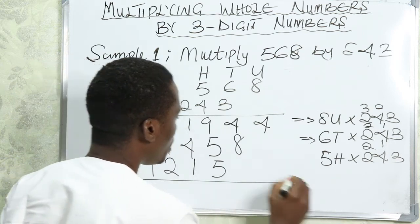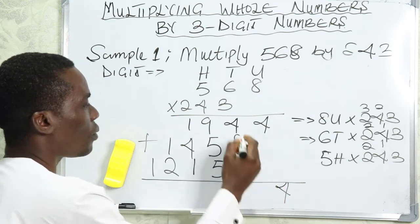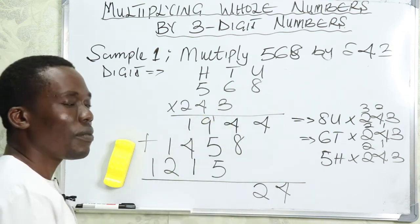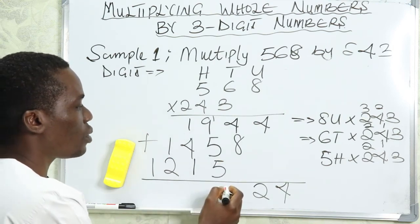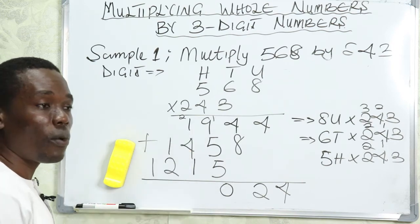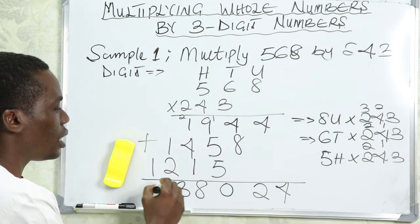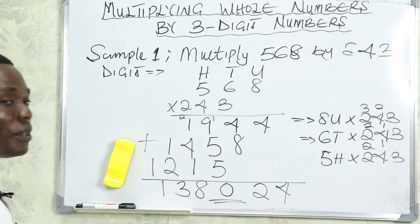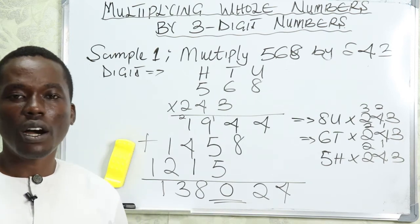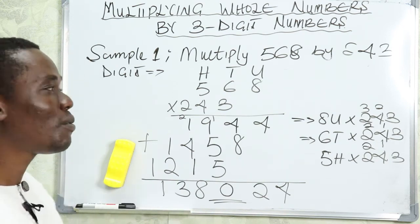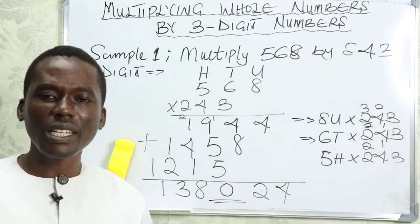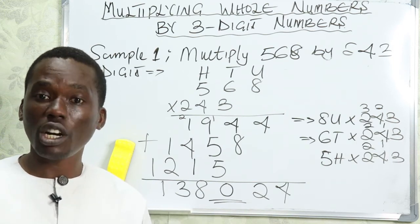Now we sum up all the results. Adding: 4 + 0 + 0 = 4; 4 + 8 + 0 = 12, write 2 carry 1; 9 + 5 + 5 + 1 = 20, write 0 carry 2; 1 + 4 + 2 = 7... giving us 1, 3, 8, 0, 2, 4. The result is exactly the same as what we got using the expanded form method. Whichever method you feel comfortable with, go ahead and use that.